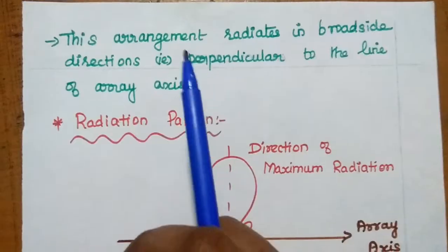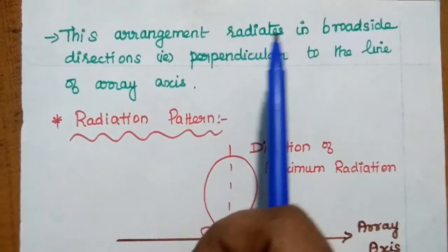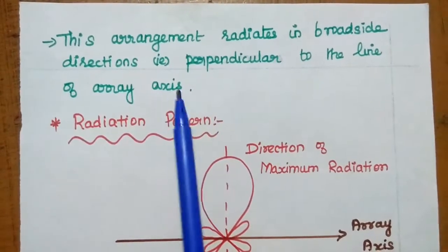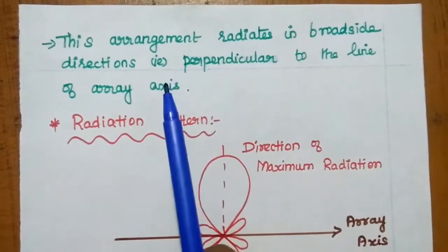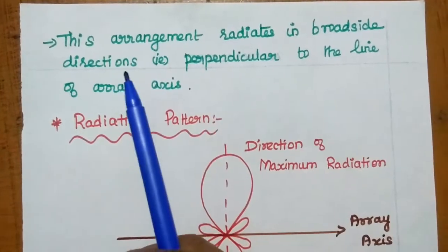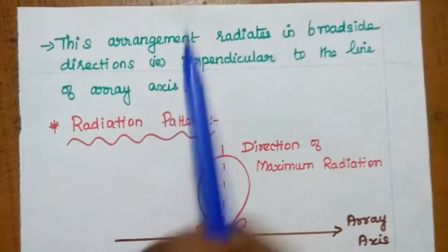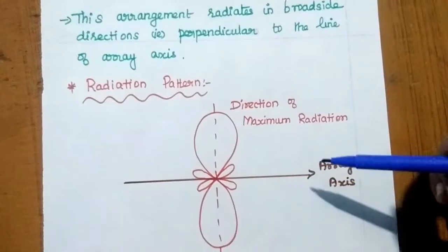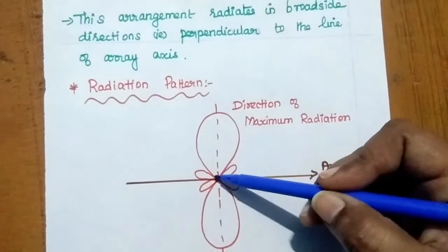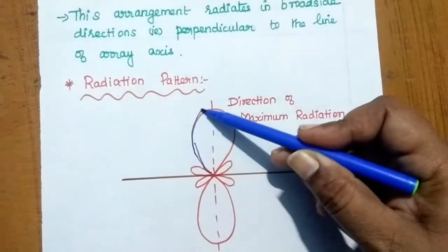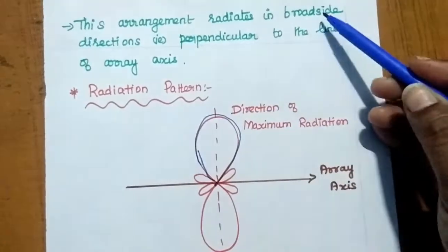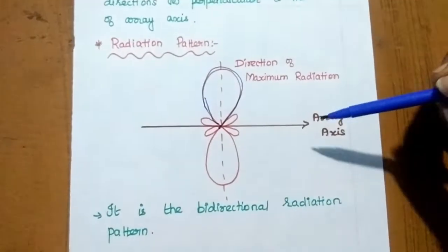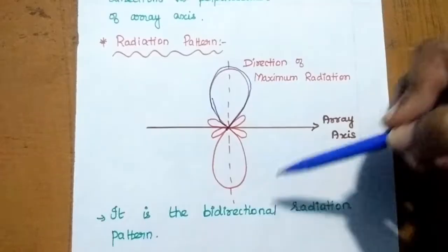This broadside arrangement radiates the signal in the broadside direction, which is perpendicular to the line of the array axis. Looking at the radiation pattern of the broadside array, the array axis runs horizontally and the maximum radiation occurs in the broadside direction — that is perpendicular to the array axis. This gives a bi-directional radiation pattern.